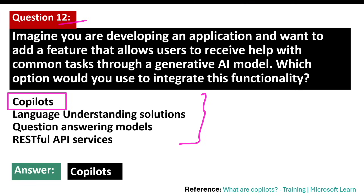Let's look at some real-world examples. First, what is GitHub Copilot? GitHub Copilot is one of the most popular examples — it is an AI-powered code completion tool integrated into a development environment. It helps programmers by suggesting code snippets, completing functions, and even writing entire blocks of code based on the context, significantly accelerating the coding process.